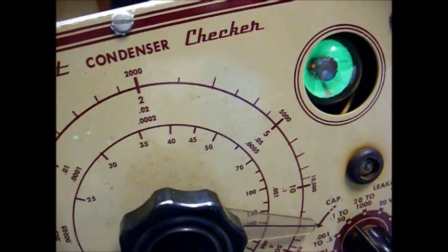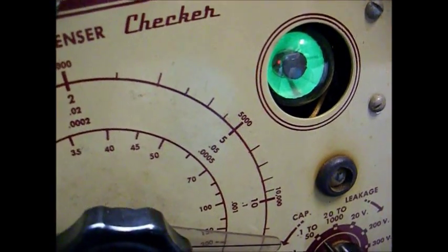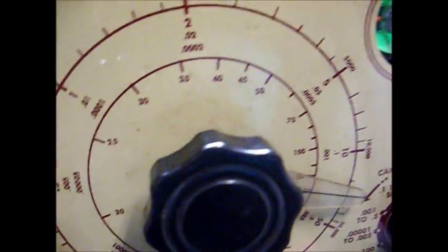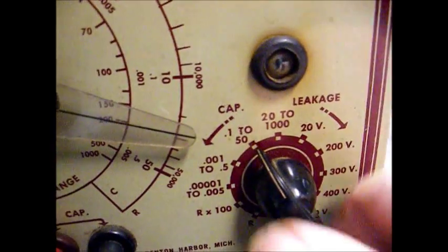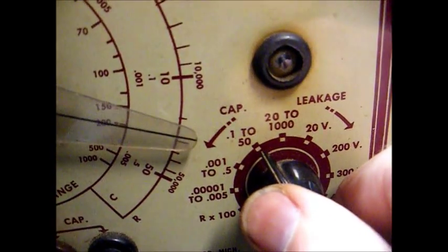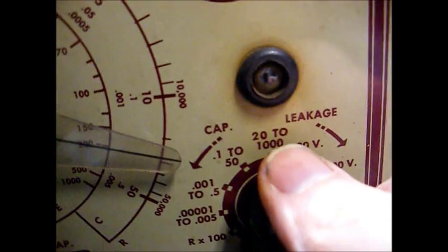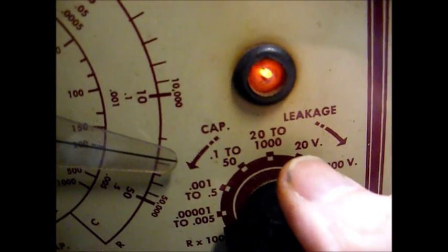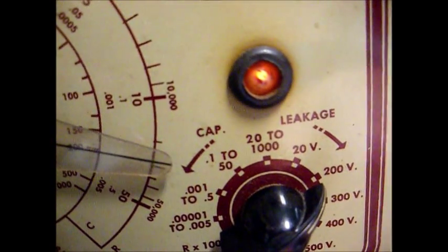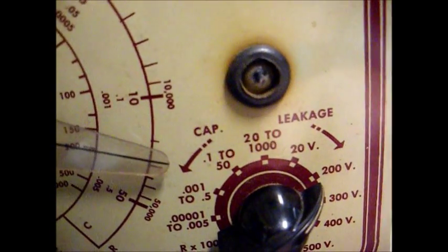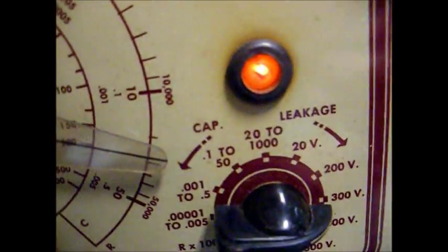I'm testing the 40 microfarad, 450 volt section. We're just barely getting some eye movement with the power factor knob all the way up, which means high ESR. Now mind you, this is a 450 working volt capacitor. And at 200 volts, you can see the light is staying on a long time, which means we have some leakage.